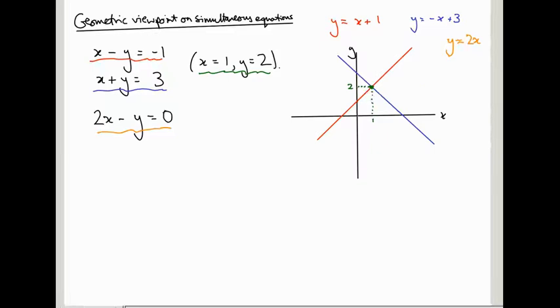Which, well, it certainly passes through the origin. It also passes through 1, 2. So let's see if I can draw this. So it's this orange line here, slope 2.